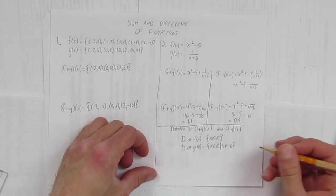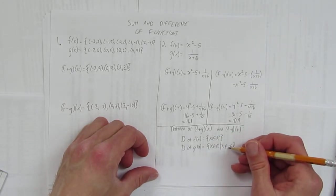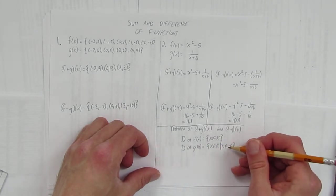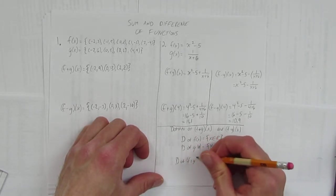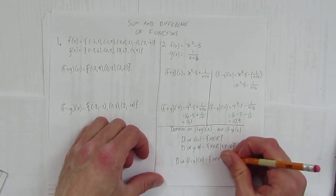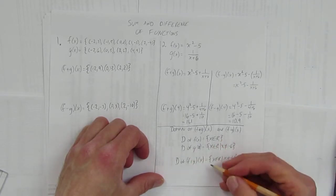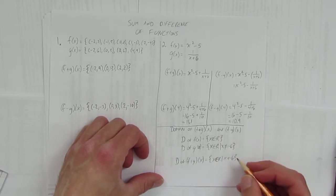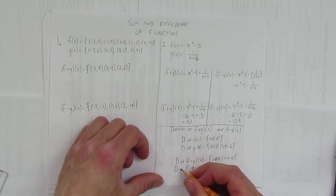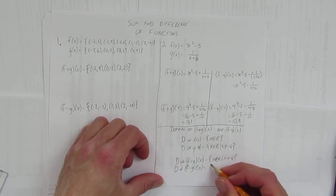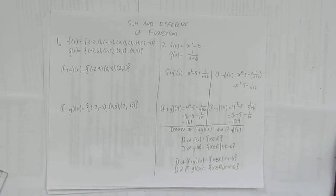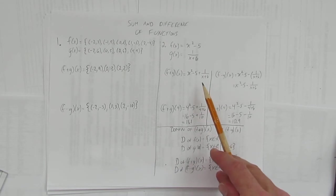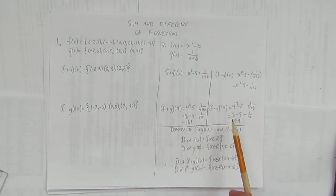And so where does the domain overlap? It overlaps for all x's except at negative 6. That is, f(x) can be any x and g(x) can be any x except negative 6. That means their combination of adding or subtracting, the domain of (f+g)(x) is where they overlap, and they overlap everywhere except at negative 6. And so the domain of (f+g)(x) is x as an element of R such that x cannot equal negative 6. And same thing for the domain of (f-g)(x): x as an element of R such that x cannot equal negative 6. And that's sum and difference of functions. We looked at adding and subtracting points, functions that were points. And we looked at adding two functions together and finding a value, or subtracting two functions, one from the other, and finding a value. And finally, we looked at their domain.